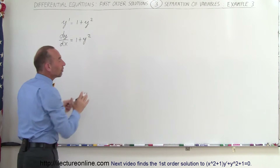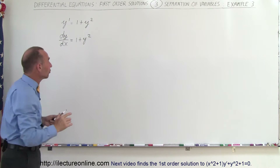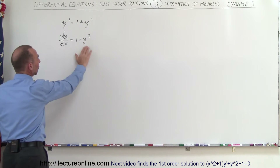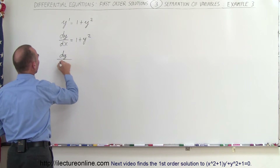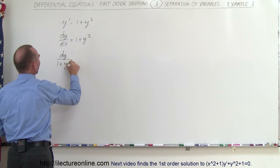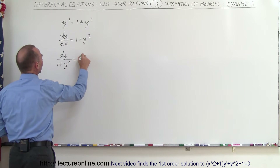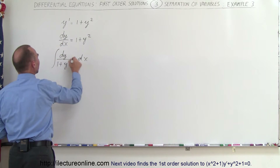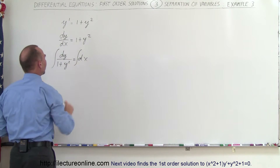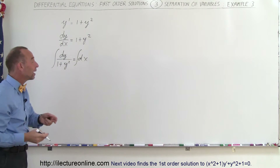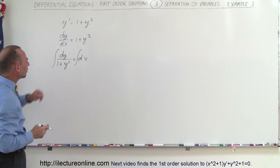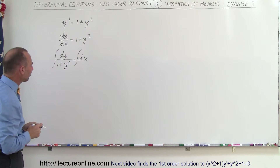Of course, we're going to separate the variables. We want all the x's on one side, all the y's on the other side. So this becomes dy over 1 plus y squared, equal to dx. Then we go ahead and integrate both sides. The right side is easy to integrate, but how do you integrate the left side?